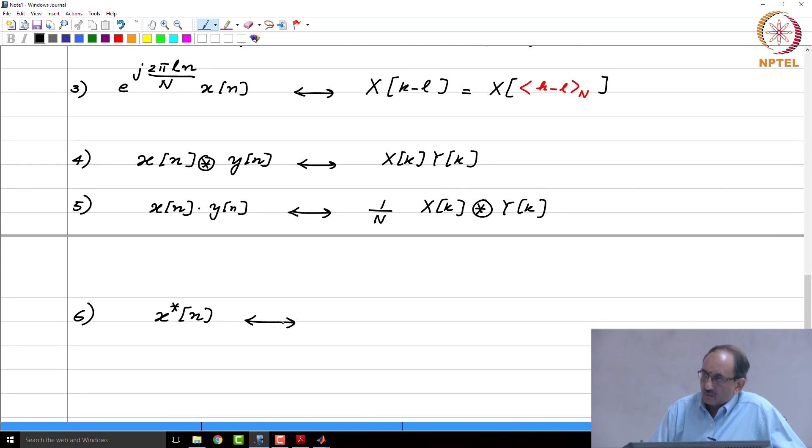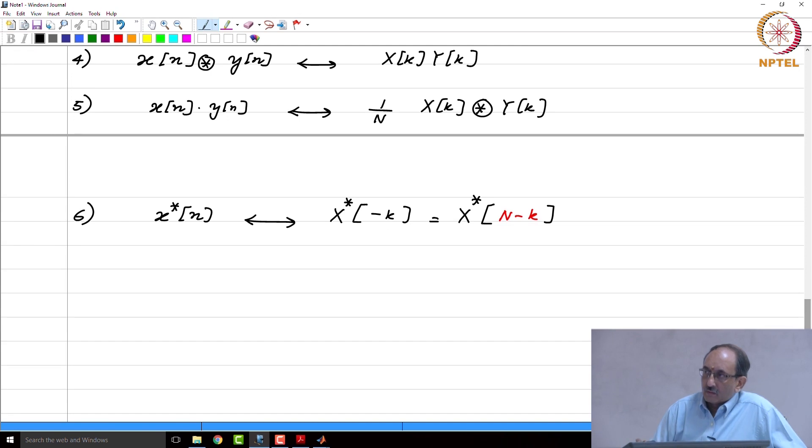x star of n, remember the corresponding DTFT property was x star of n had DTFT x star of e to the minus j omega. Therefore, you can expect this to be x star of minus k, but immediately x star of minus k is nothing but x star of, remember every index is index mod cap N. Therefore, x star of minus k is really x star of N minus k.